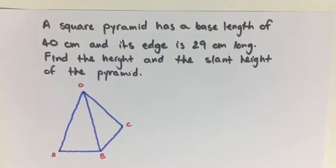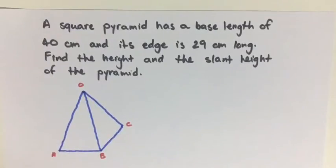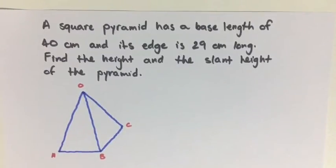We have a square pyramid that has a base length of 40 centimeters. Its edge is 29 centimeters. We want to find the height and the slant height of the pyramid.